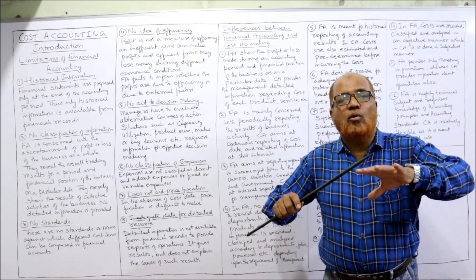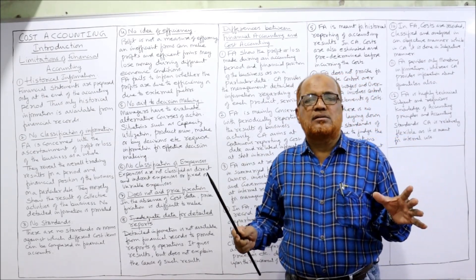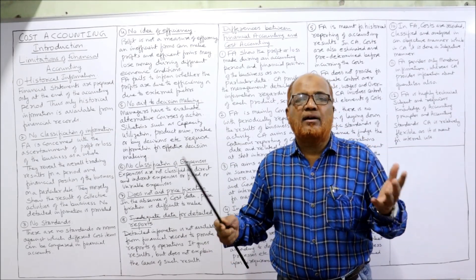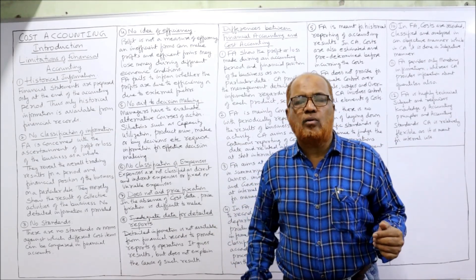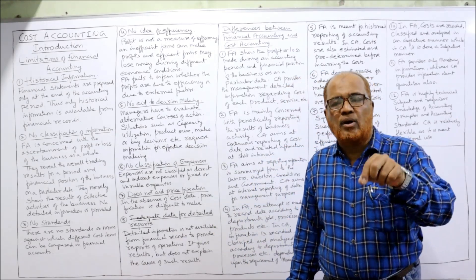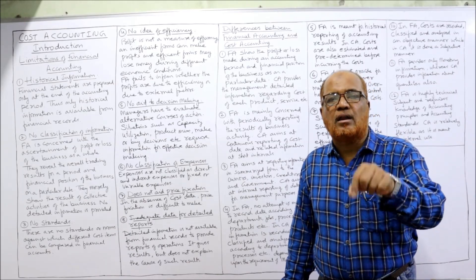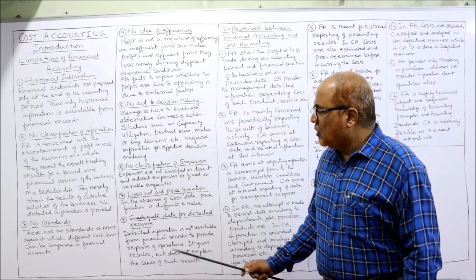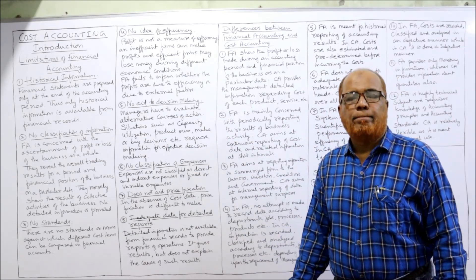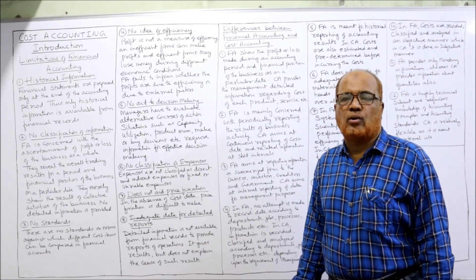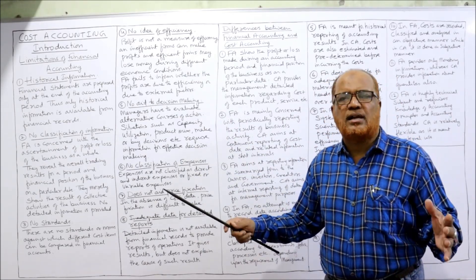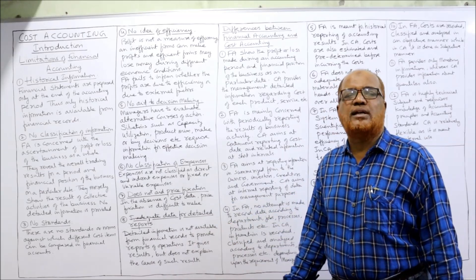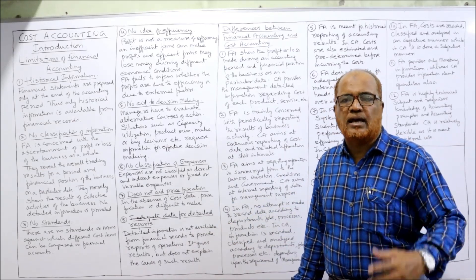The eighth limitation is inadequate data for detailed reports. Financial accounting gives only the overall result of the business; detailed reports cannot be made from it. But management and many other users require detailed reports. These are the eight limitations of financial accounting — many more exist, but these eight are explained so you can remember and write them in examinations.